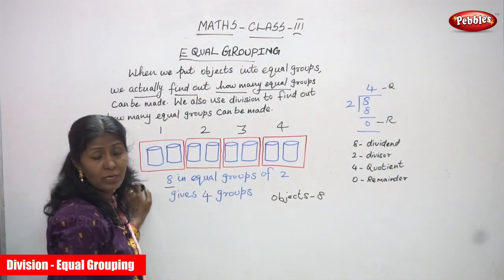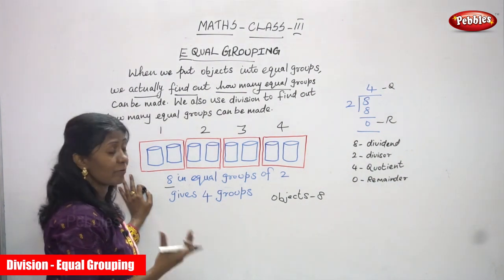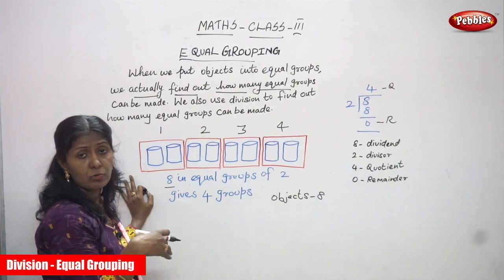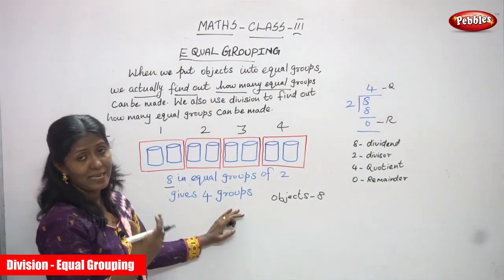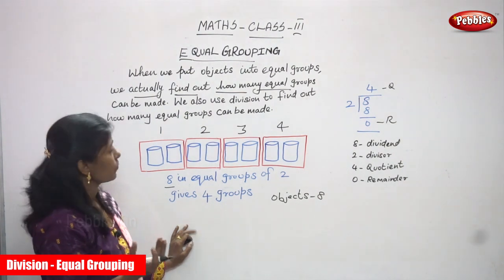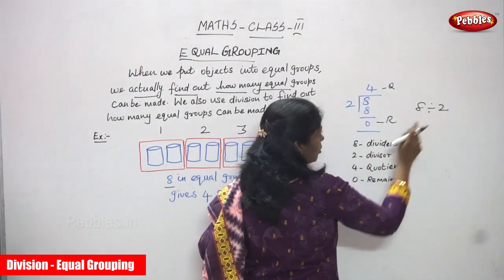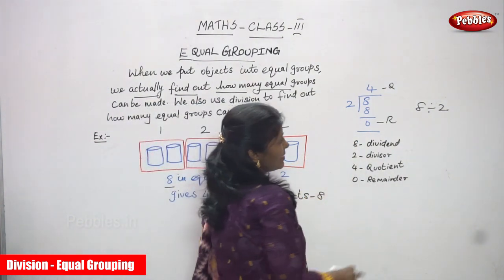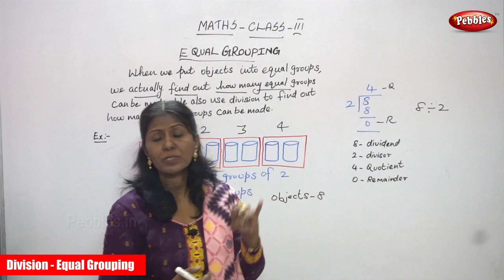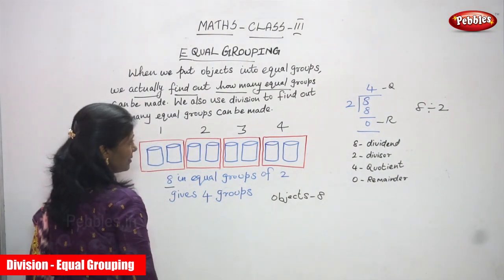For this purpose also we use division, but it is equal grouping. Total number of cylinders is 8. In each group I arranged 2 cylinders. So totally how many groups? 4 equal groups. That means 8 is divided by 2. You must use the 2 times table: 2×1=2, 2×2=4, 2×3=6, 2×4=8. So you can get 4 groups.